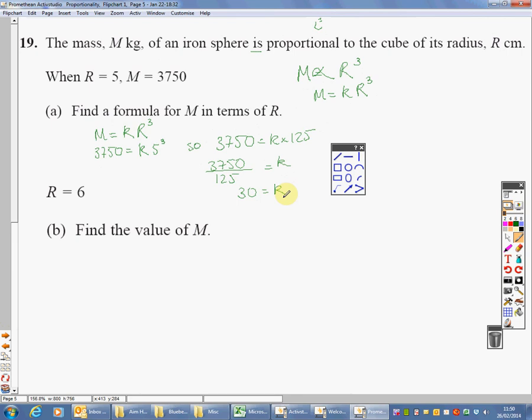Again, don't forget, they wanted a formula. We've just worked out what K is so we need to quote and write down the formula. So the actual formula is going to be M equals K. We've worked out K is 30, R cubed.